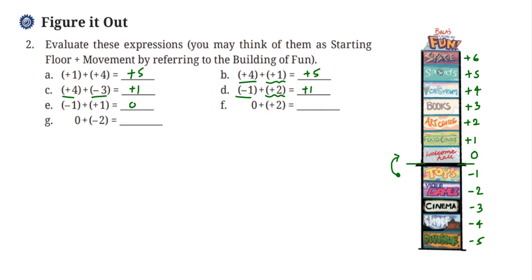Next we have zero plus two. We start from zero, the ground floor, and go two floors up — one, two — we reach our center, which is the second floor, plus two. Then the last one: zero minus two. We start from zero and go two floors down — one, two — we reach video games, which is two floors below the ground. We get minus two.